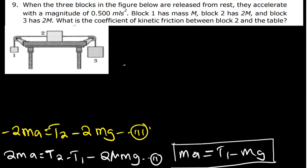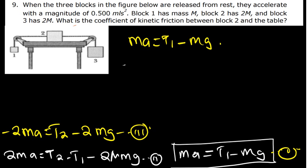Now that we have Equations 1, 2, and 3, our goal is to find the coefficient of kinetic friction. We need to eliminate the tension forces. In Equation 1, I am going to make T1 the subject of formula: MA = T1 − Mg, so T1 = MA + Mg. I will then replace T1 in Equation 2 with MA + Mg.